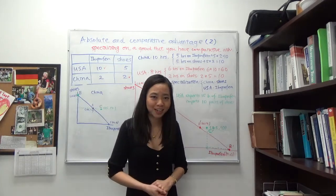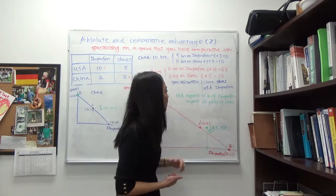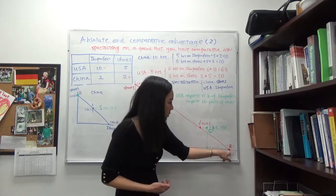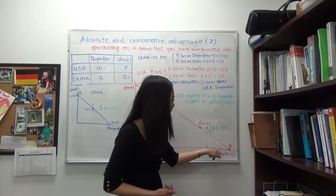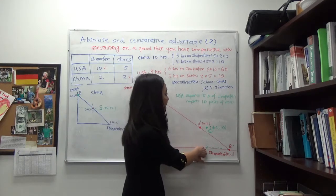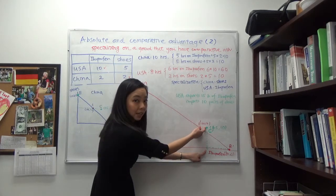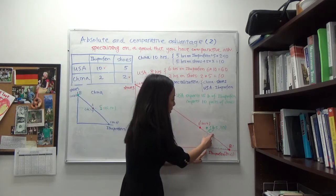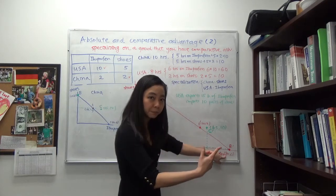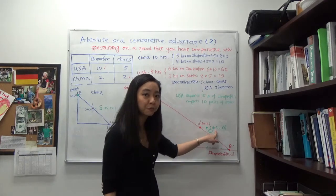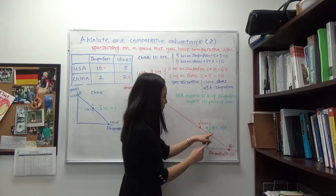Suppose USA exports 15 bottles of ibuprofen in exchange for ten pairs of shoes. Starting from point B prime, USA moves left by 15 units of ibuprofen due to exports, then moves up by ten units of shoes due to imports. USA ends up consuming at point C prime: 65 bottles of ibuprofen — producing 80 and exporting 15 — and ten pairs of shoes gained from China.